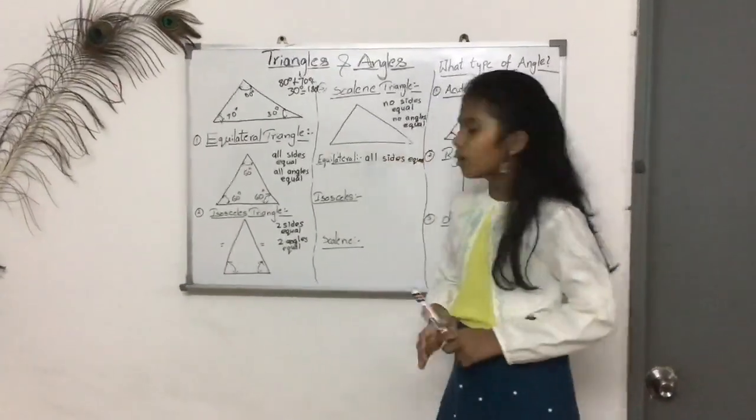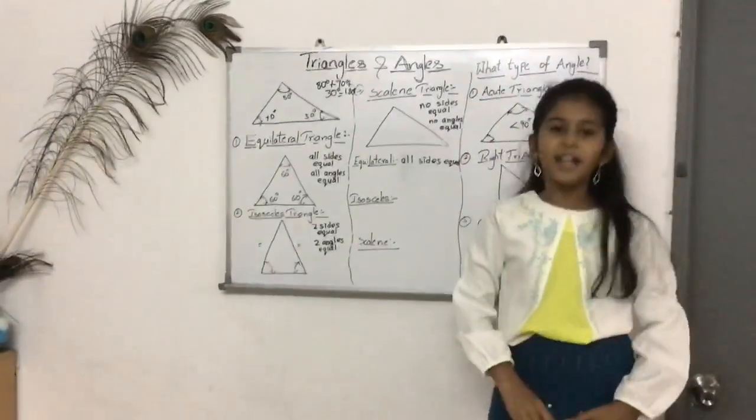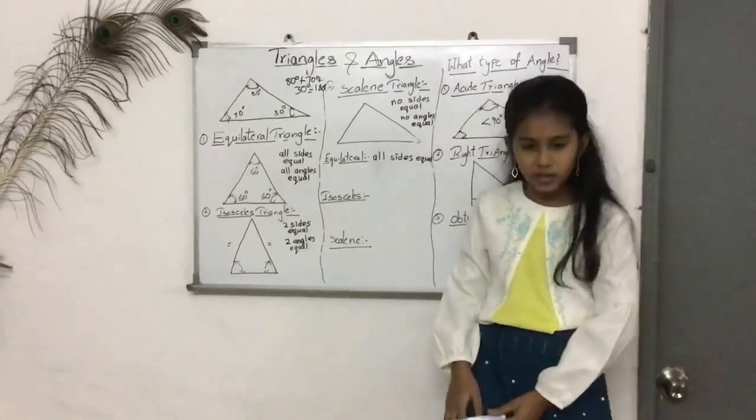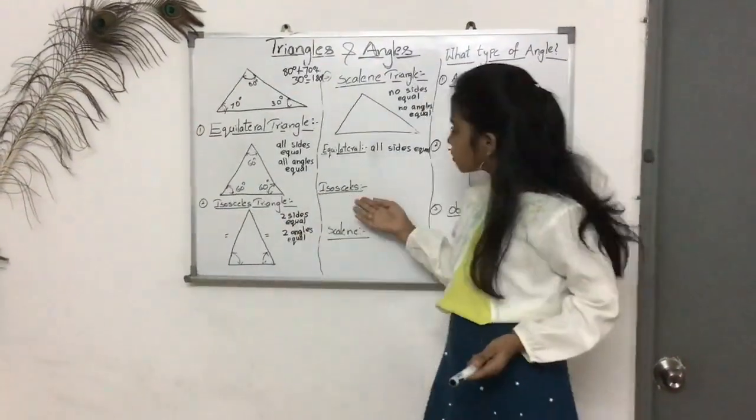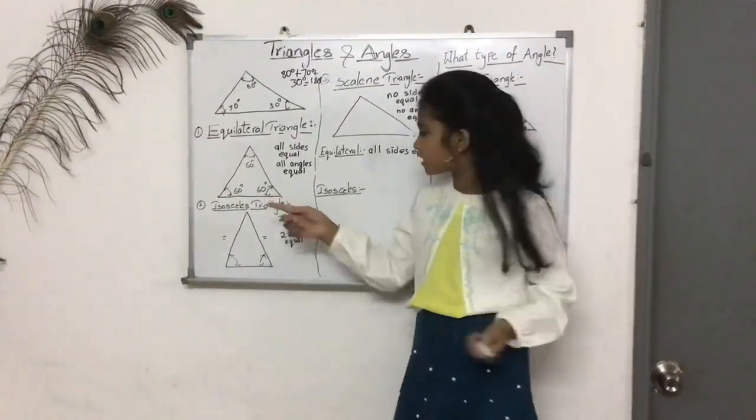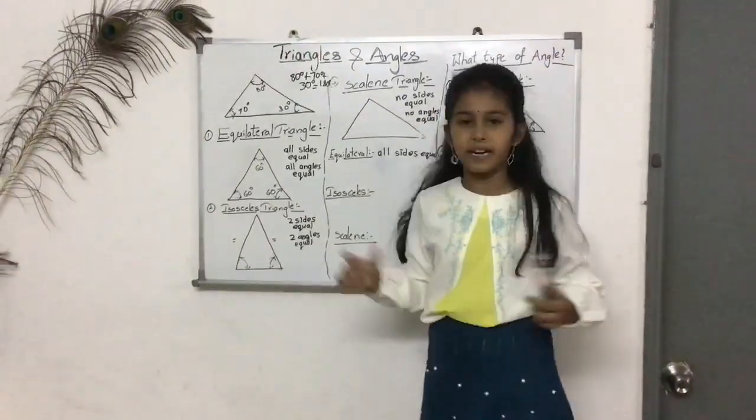And now, isosceles triangle means we have two legs, right? So it's also isosceles, two sides equal and two angles equal.